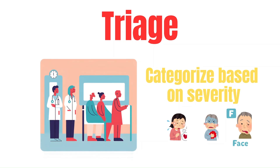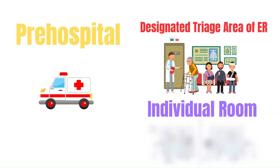What is triage? It's the process of sorting patients based on how ill they are, with the goal of prioritizing patients who are more critical, so that these patients receive interventions first. As you are aware, staffing and resources are often limited in the ER. Triage helps us use our limited resources more effectively.